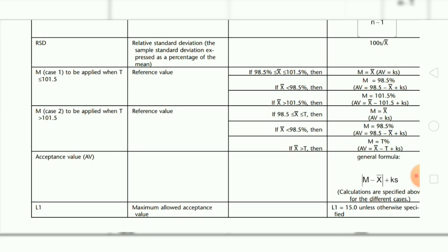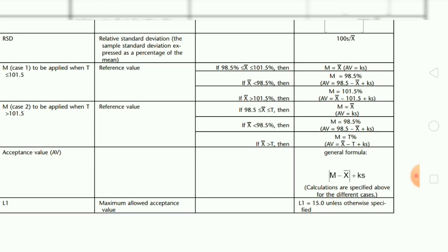Now I will discuss Case 2. Case 2 applies when t is greater than 101.5%. If 98.5% is not greater than x-bar and x-bar is not greater than d, then m equals x-bar and AV equals ks. If x-bar is not greater than 98.5%, then m equals 98.5% and AV equals 98.5 minus x-bar plus ks. If x-bar is greater than t, then m equals t% and AV equals x-bar minus t plus ks.